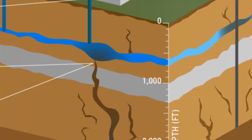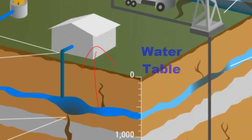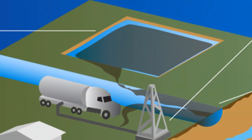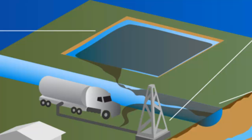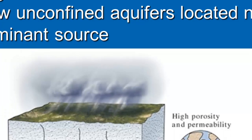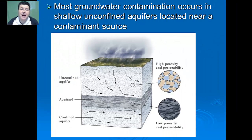Unfortunately, this high pressure fracturing can also introduce additional fractures which might release the gas and allow it to enter into our groundwater sources. Additionally, the fracking fluid must be stored in lagoons which are sometimes poorly constructed, and when it rains, it can overflow. So either leaking or overflowing lagoons can also introduce hazardous contamination into shallow, unconfined aquifers near the contaminant source.